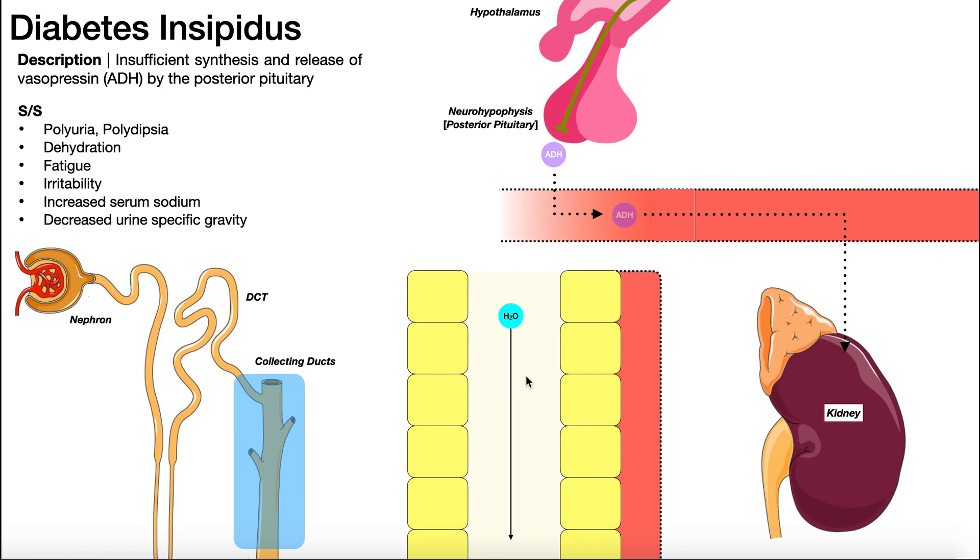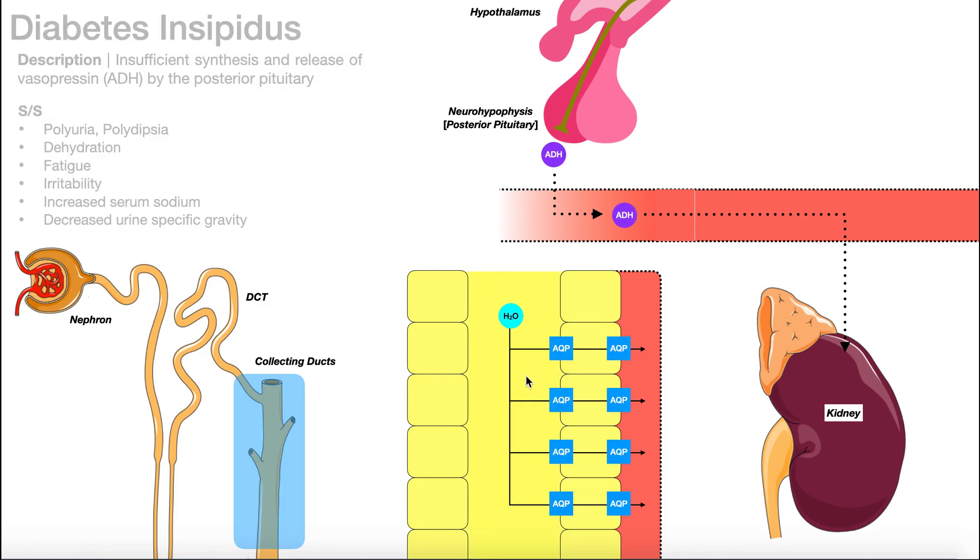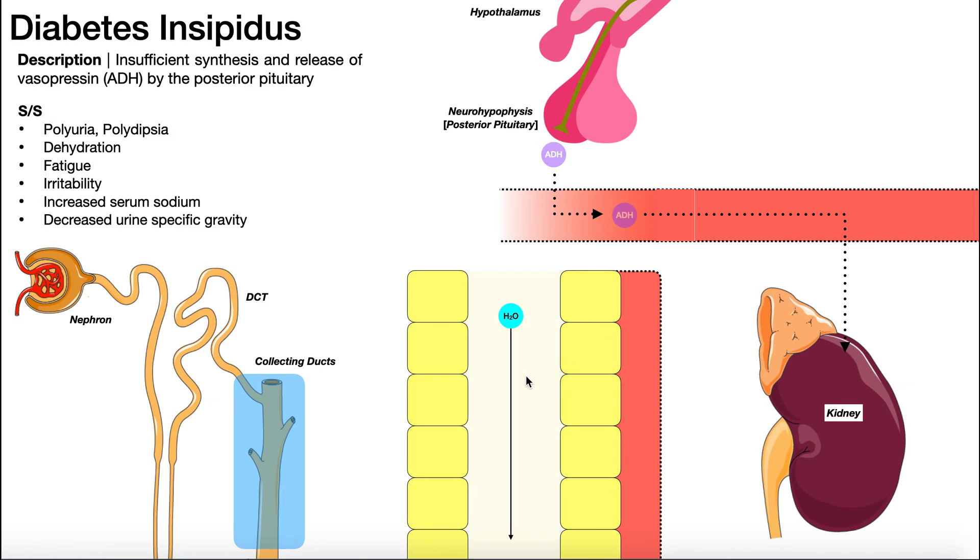And then in terms of the filtrate, what will become the urine, it's going to be much clearer. Notice the difference between normal function of ADH and diabetes insipidus. Now we have that water remaining in the filtrate. So the urine is going to be much more clear. And so there's going to be a much higher ratio of water to all the solutes. And so this would be referred to as a decreased urine specific gravity.